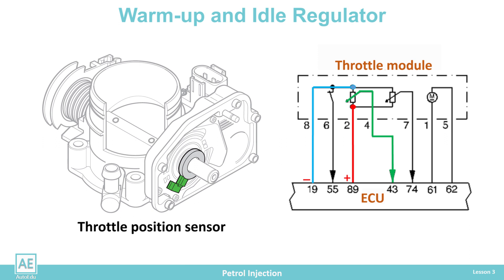In the case of a malfunction, the ECU estimates the throttle position based on alternate data from the load sensor and engine speed. A sensor failure is stored and the ECU can recognize three different states: open circuit, open circuit or short to ground, open circuit or short to plus power supply, and inappropriate signal from the sensor.